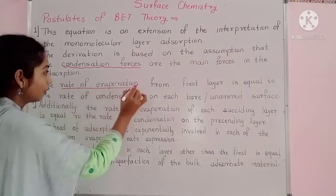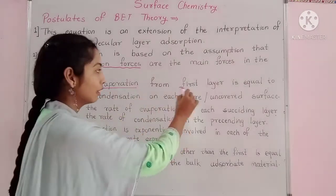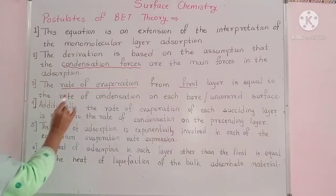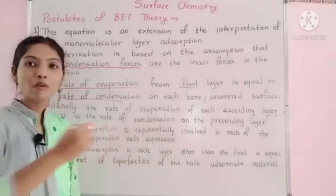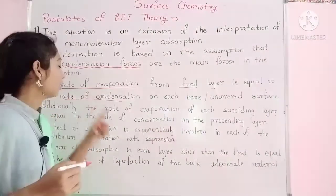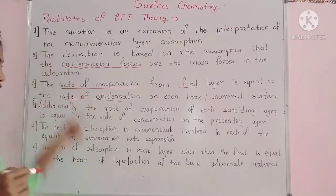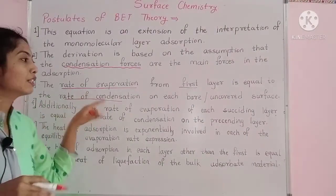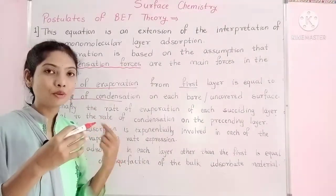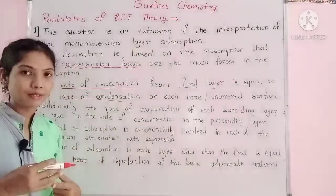The rate of evaporation from first layer is equal to the rate of condensation on each bare or uncovered surface. That means rate of evaporation of first layer is equal to the rate of condensation of the next uncovered surface.